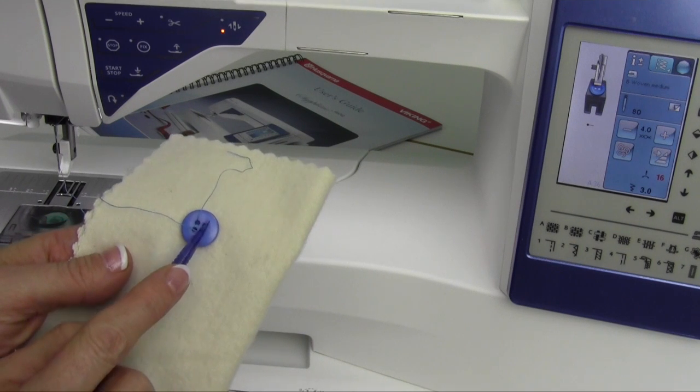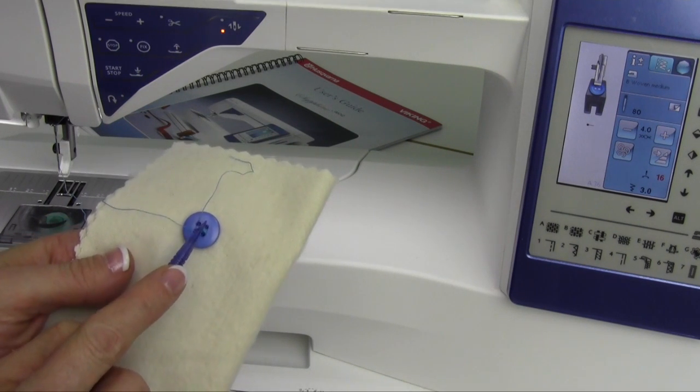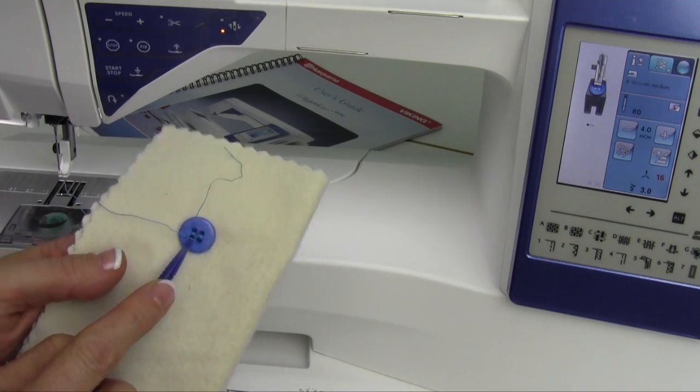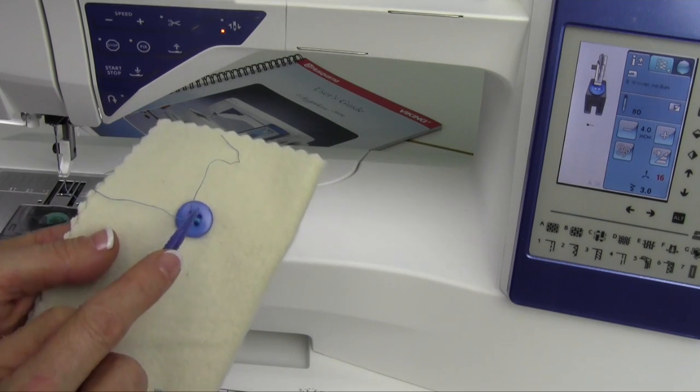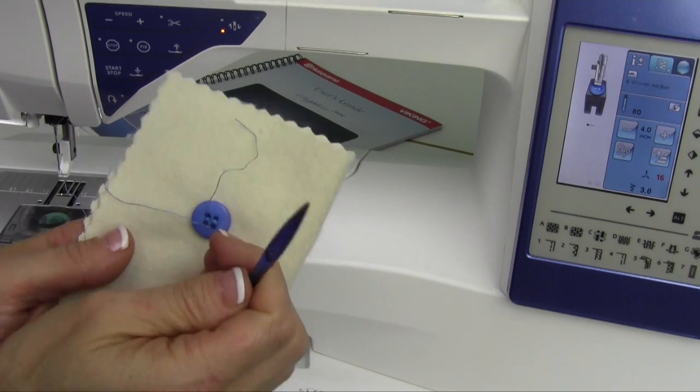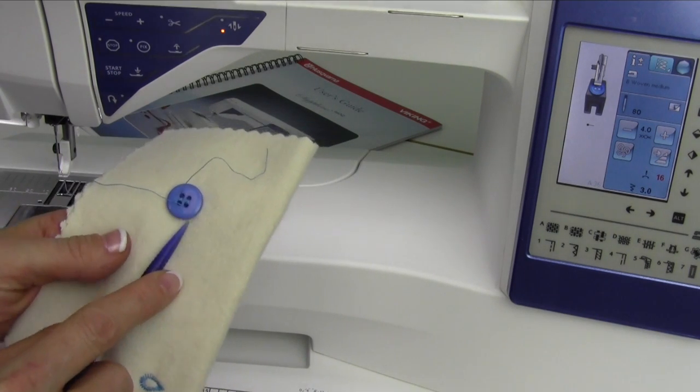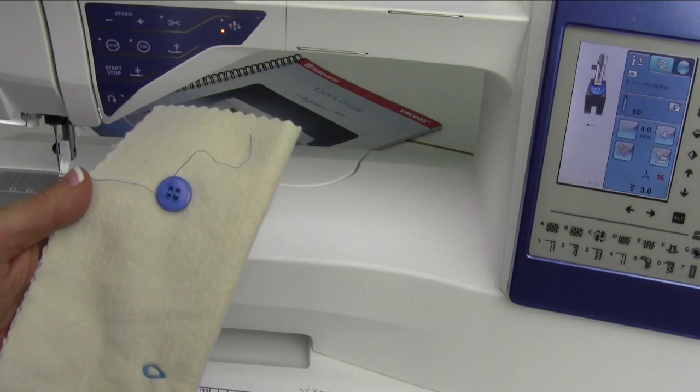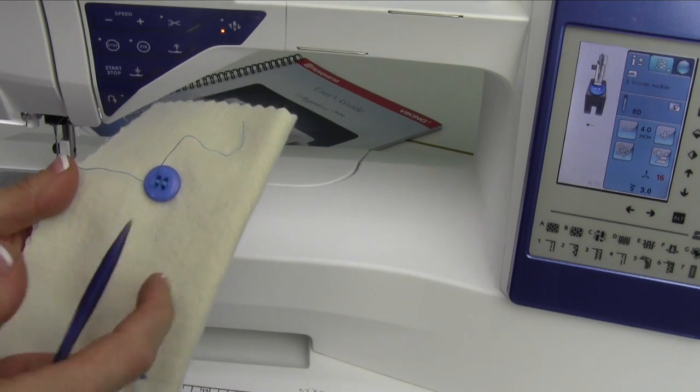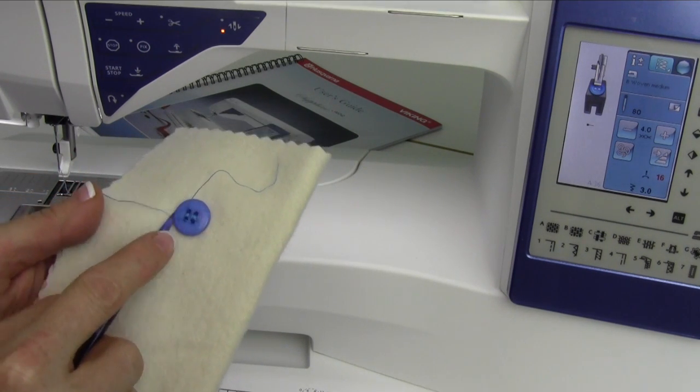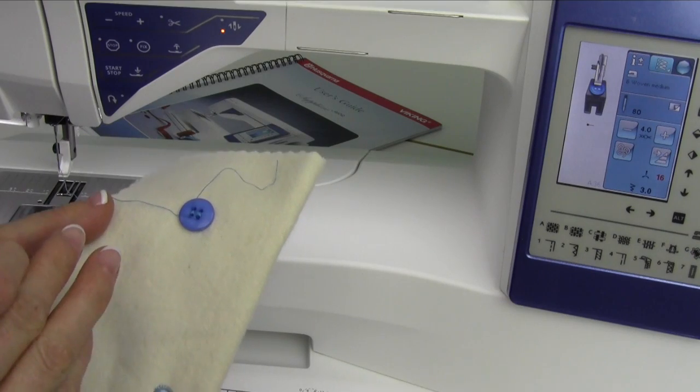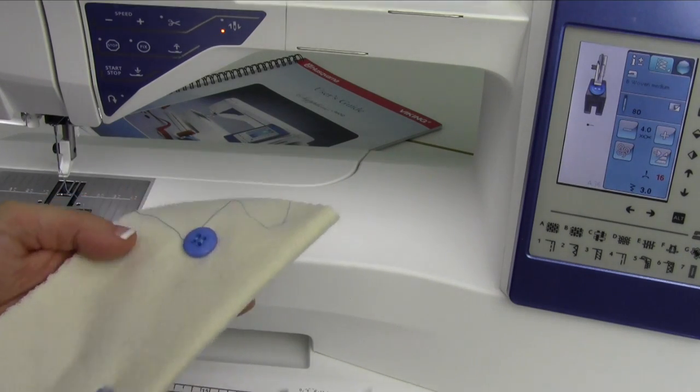Another quick little tip is if you take fray check and put a drop of that on your buttons that you sew on, they'll never come loose because the threads kind of meld together, glue together. You can use that tip to go through your entire closet, especially for the dress shirts of a men's shirt. You can go and put fray check on every one of his buttons and you'll never have to sew buttons on. Isn't that nice?